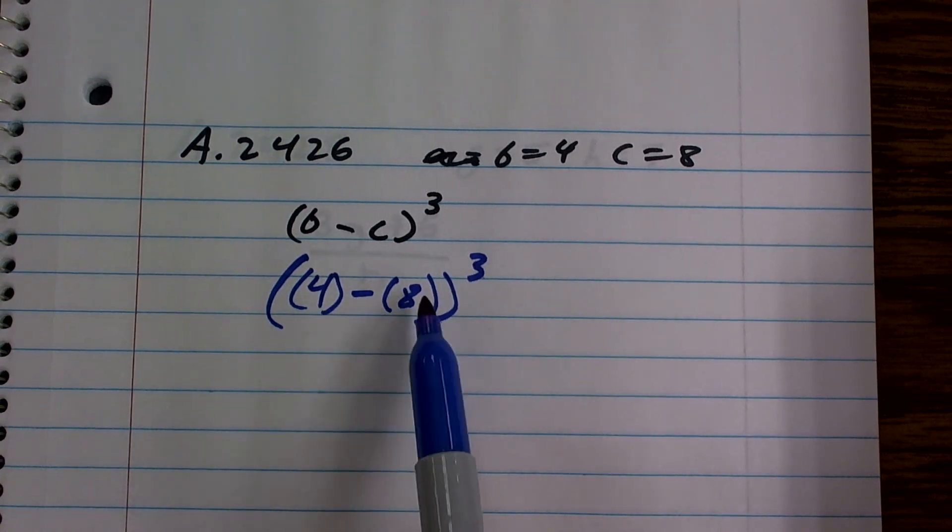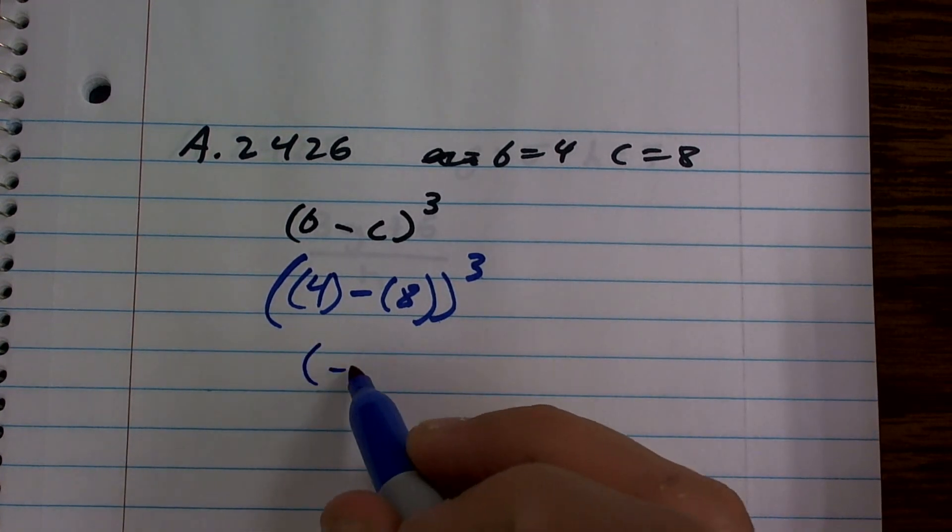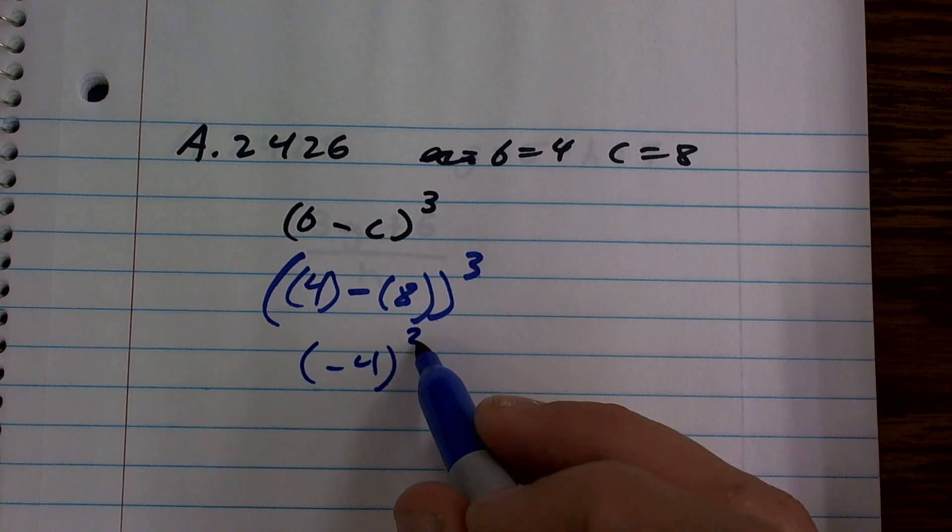So I don't really need, actually, these parentheses. I can just subtract 4 minus 8, which is going to give me a negative 4 cubed.